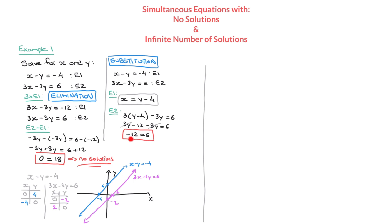Notice that when using substitution, we won't necessarily get 0 equals something — instead we reach one number equaling a different number. But the conclusion is the same. If you add 12 to both sides of negative 12 equals 6, you get 0 equals 18, just as before. As soon as you reach a contradiction like 0 equals 18 or negative 12 equals 6, you're dealing with parallel lines and no solution.